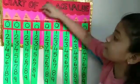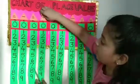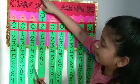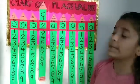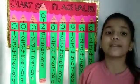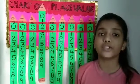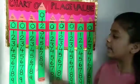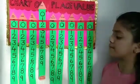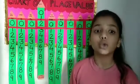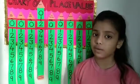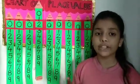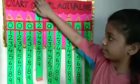But if I took two on the lakhs period, so in the Indian place value system it is known as two lakhs. But in the international number system it is known as two hundred thousand, because they are placed on different periods.